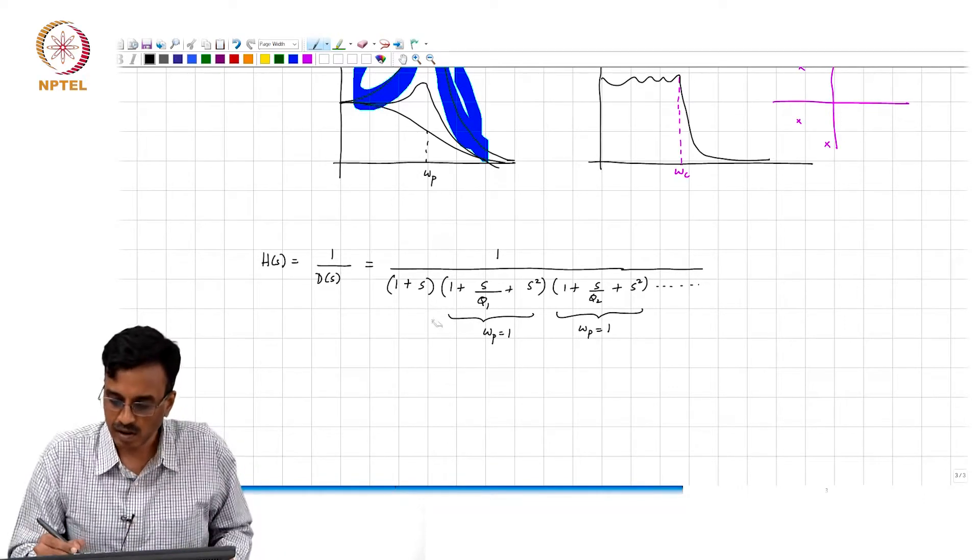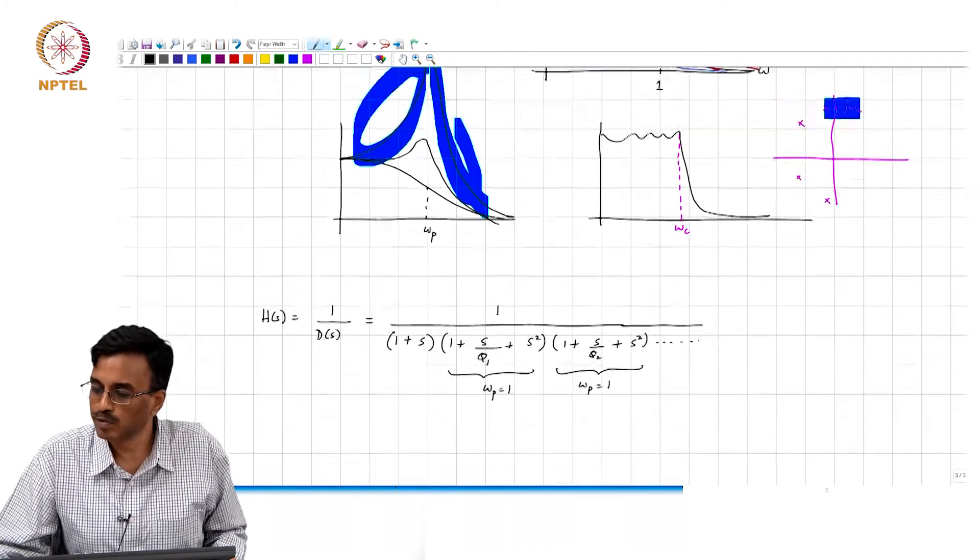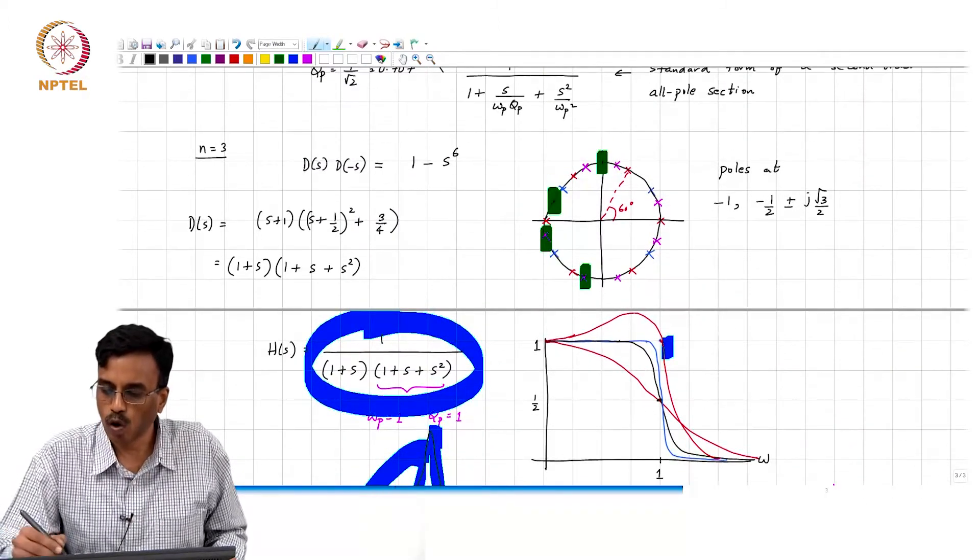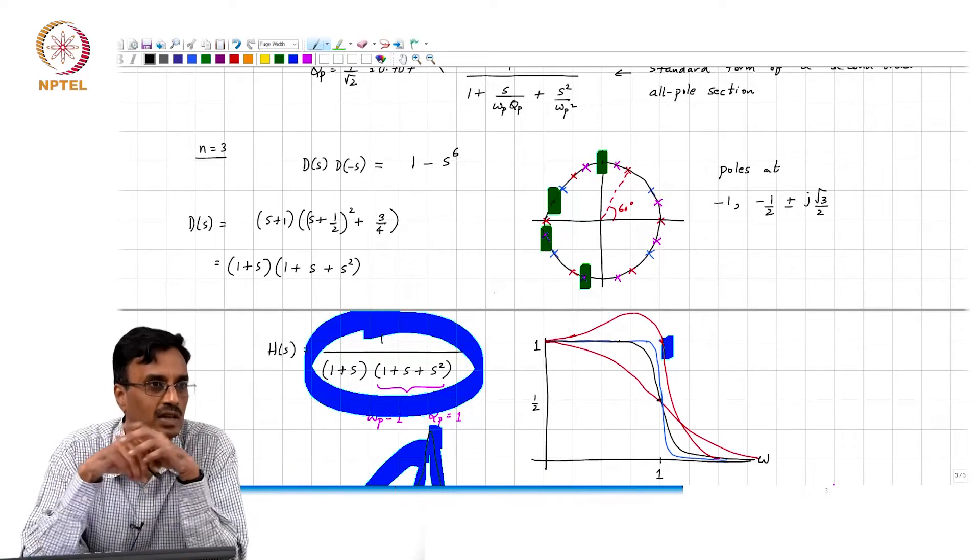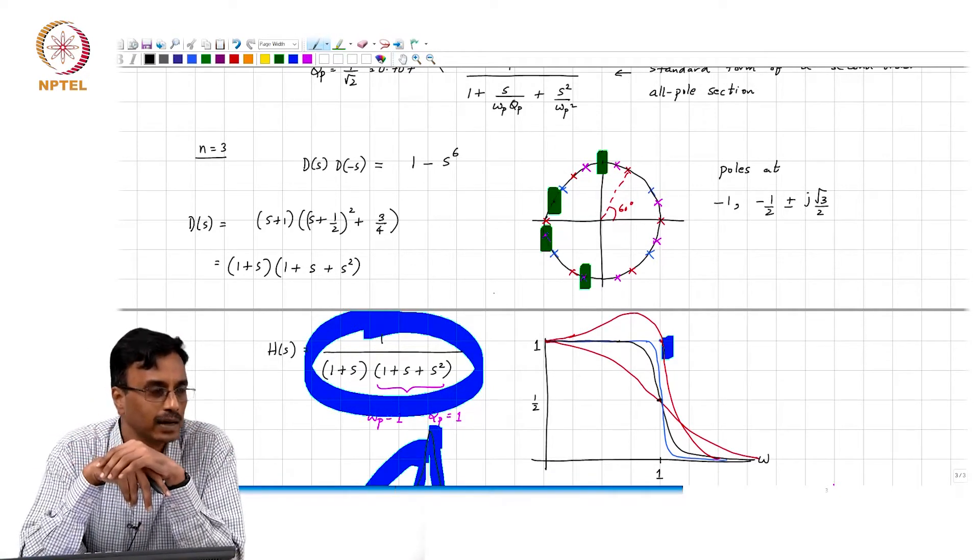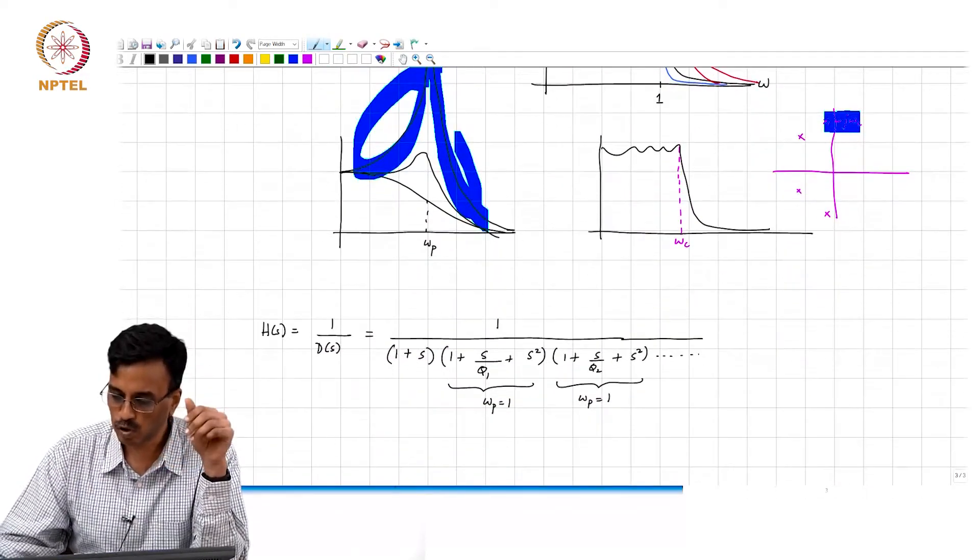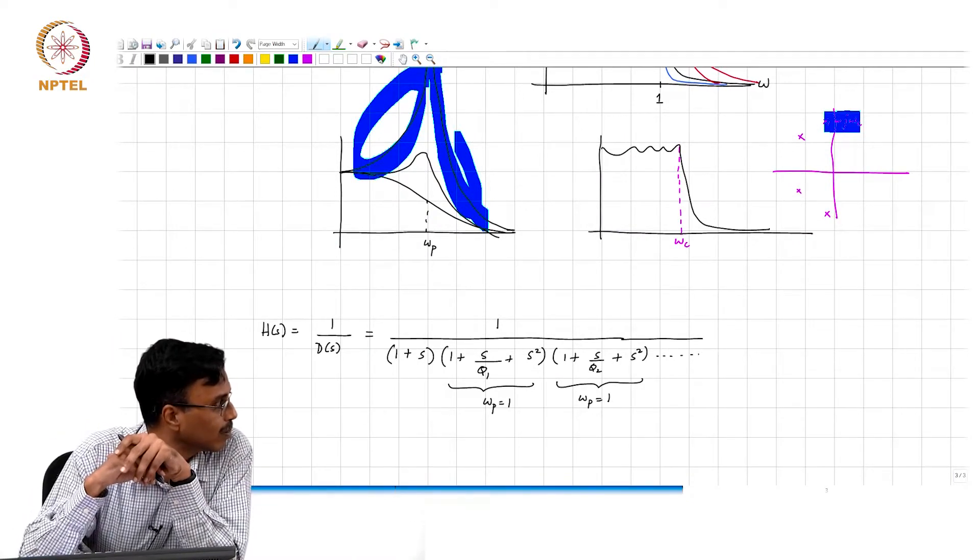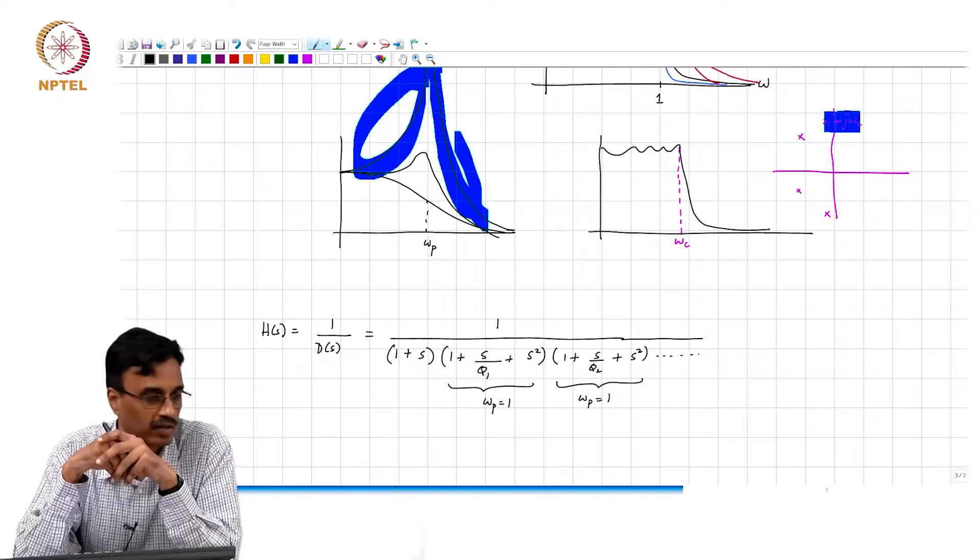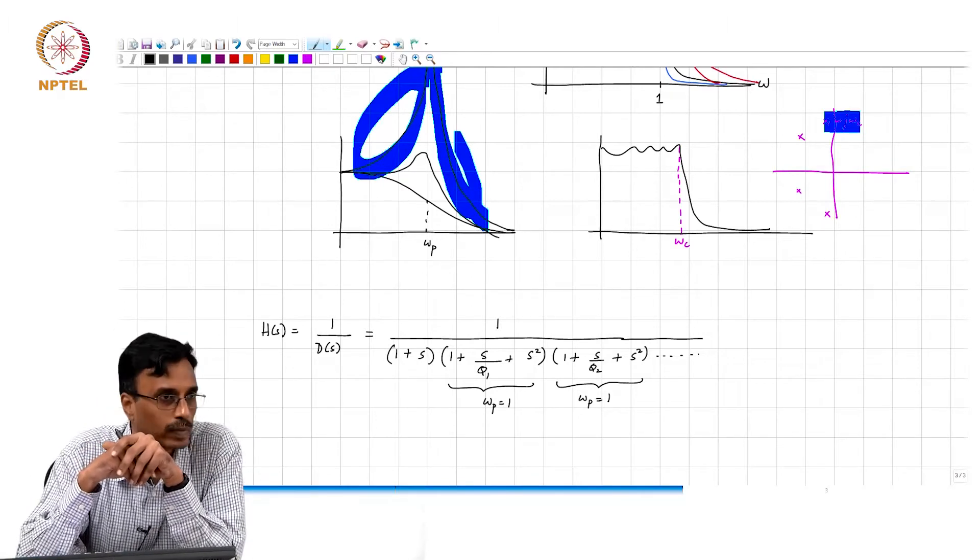It is indeed a coincidence. In general that need not be true, but in the special case of Butterworth filter, realize that the magnitude of all these poles is 1, and therefore it must follow that the product of the roots must also be 1. It is not a general thing, it only happens in the case of Butterworth.